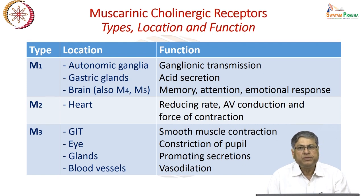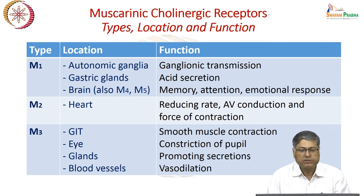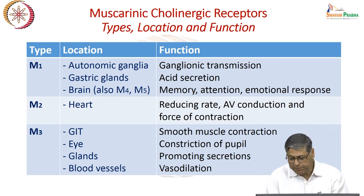M3 receptors are more widespread in the periphery compared to M1 or M2. They are found in gastrointestinal tract smooth muscles, the eye, glands, and blood vessel smooth muscles. Stimulation of M3 receptors causes contraction of smooth muscles, while blocking them causes relaxation — the effects of which can be appreciated across these multiple organ systems.